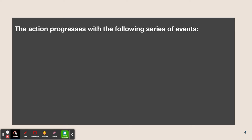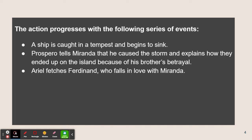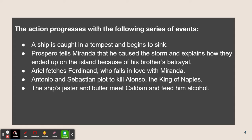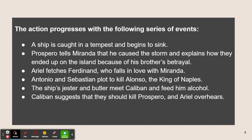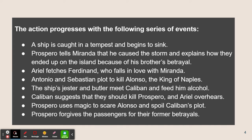Now, the action progresses with the following series of events. A ship is caught in a tempest and begins to sink. Prospero tells Miranda that he caused the storm and explains how they ended up on the island because of his brother's betrayal. Ariel fetches Ferdinand, who falls in love with Miranda. Antonio and Sebastian plot to kill Alonso, the king of Naples. The ship's jester and butler meet Caliban and feed him alcohol. Caliban suggests that they should kill Prospero, and Ariel overhears. Prospero uses magic to scare Alonso and spoil Caliban's plot. Prospero finally forgives the passengers for their former betrayals.